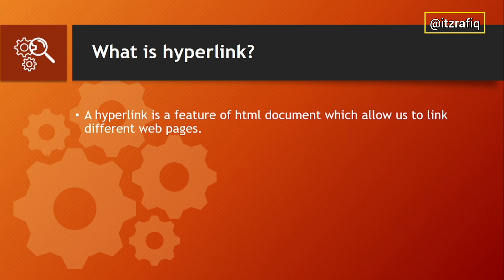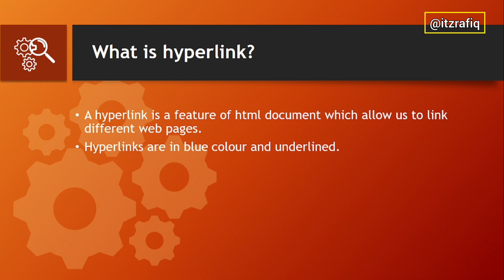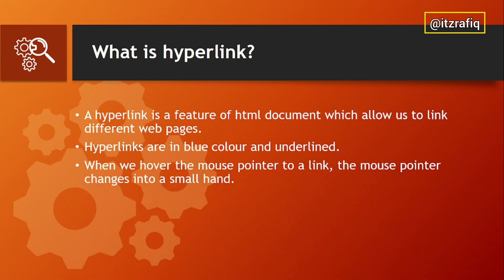What is a hyperlink? A hyperlink is a feature of an HTML document which allows us to link between different web pages. Through hyperlinks we can easily navigate from one page to another on the web. By default, hyperlinks appear in blue color and are underlined, so when you see blue underlined text, you know it is a link.